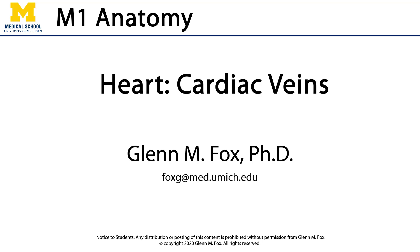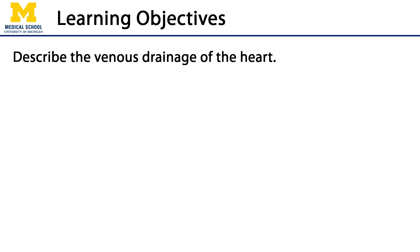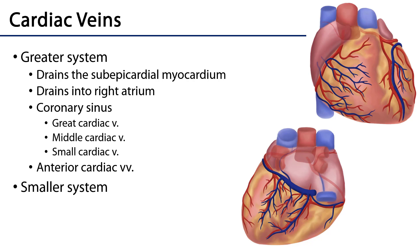Let's talk about the cardiac veins. In this video we'll discuss the venous drainage of the heart. The cardiac veins are of two systems: there is the greater system, which is the bulk of drainage from the heart, and the smaller system. The greater system drains most of the myocardium, specifically what we would refer to as the subepicardial myocardium — so that's nearly the full thickness of the myocardium.